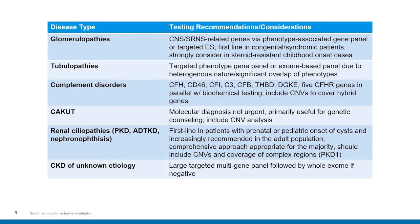The information provided up to this point is applicable across genetic testing for different disease types, but the authors also walk through specific conditions and considerations when ordering genetic testing for particular patients. Monogenic contributions vary across different phenotypes, and certain mutation types such as copy number variants might play a bigger role in certain situations. They stratify their recommendations for testing approach based on disease type, as summarized in the table on this slide.